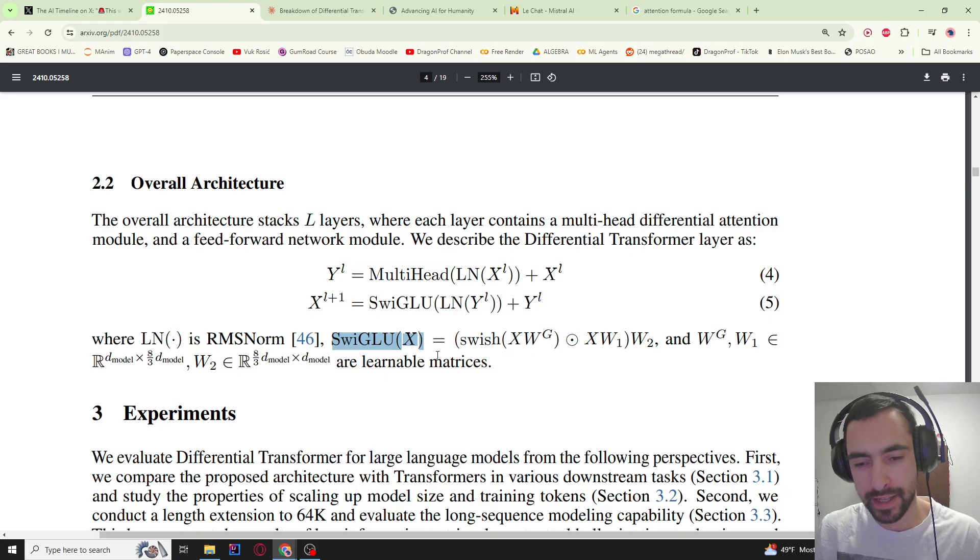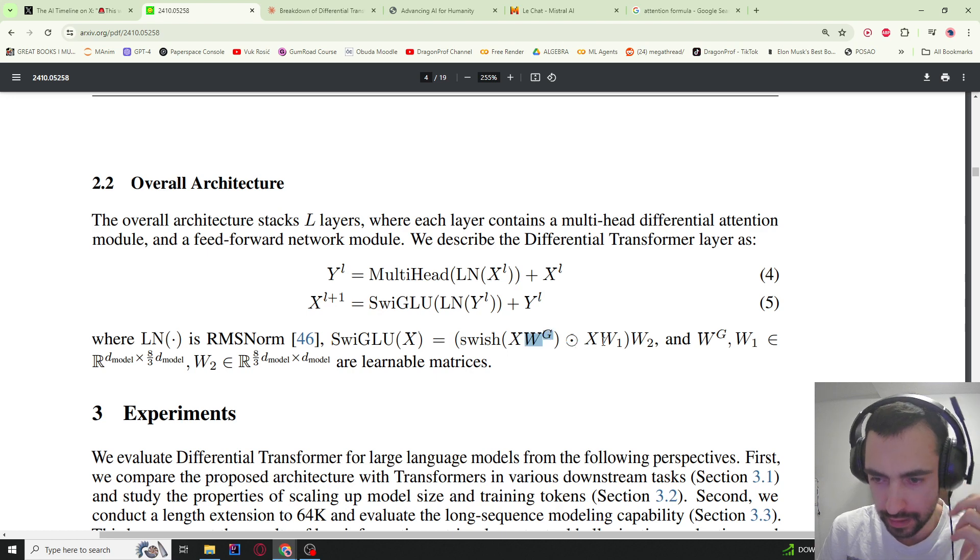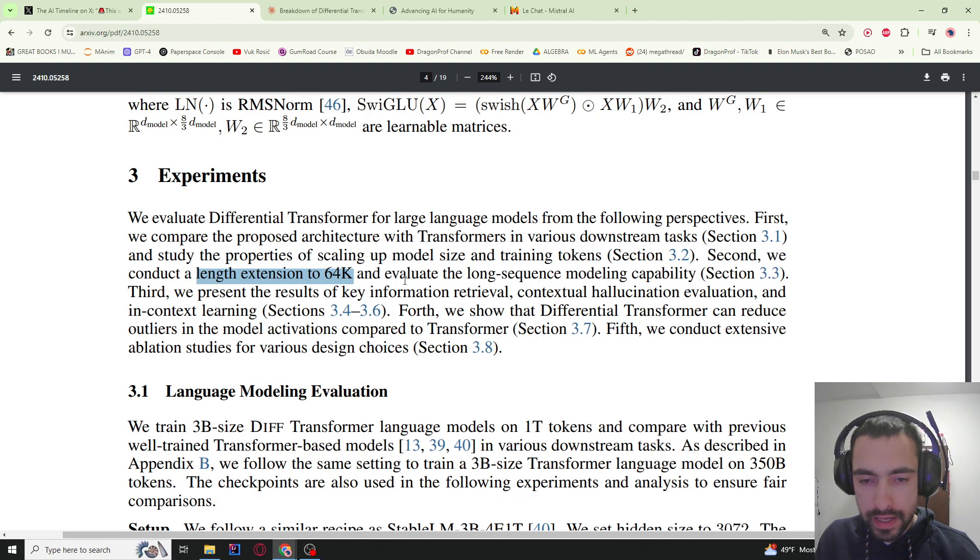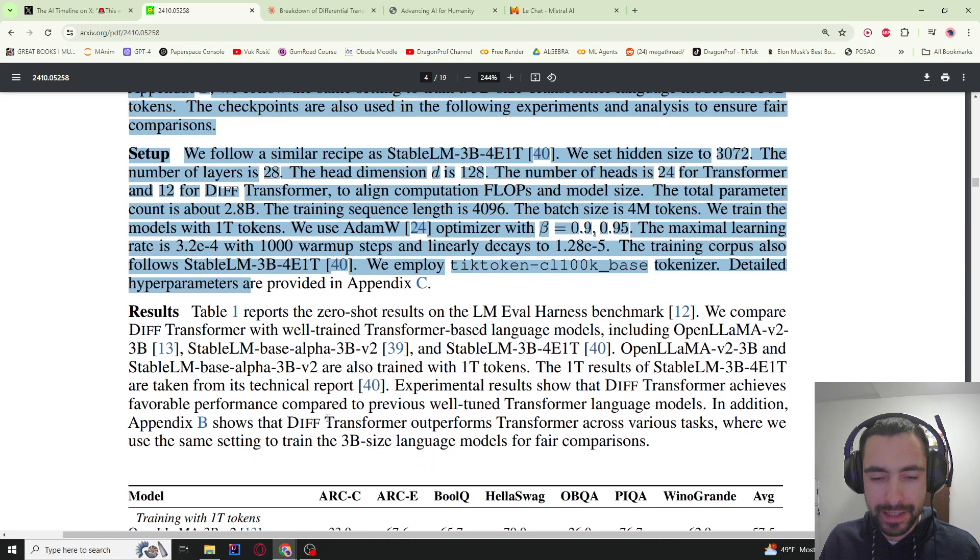This SwiGLU is more advanced than a normal feed-forward network. It combines swish activation function and gated linear unit. X is input to the beginning tokens, and then this is a learnable parameter, learnable parameters. This is element-wise multiplication. And then we have these weird dimensions—this is the best I can explain, it's not 100% clear to me either. In their experiments, they first compare it to a normal transformer, then they extend the length to 64k tokens. Then they test it in key information retrieval, contextual hallucination evaluation, and in-context learning. They see how differential transformer can reduce outliers which helps with quantization, and they also do extensive tests for the design choices.